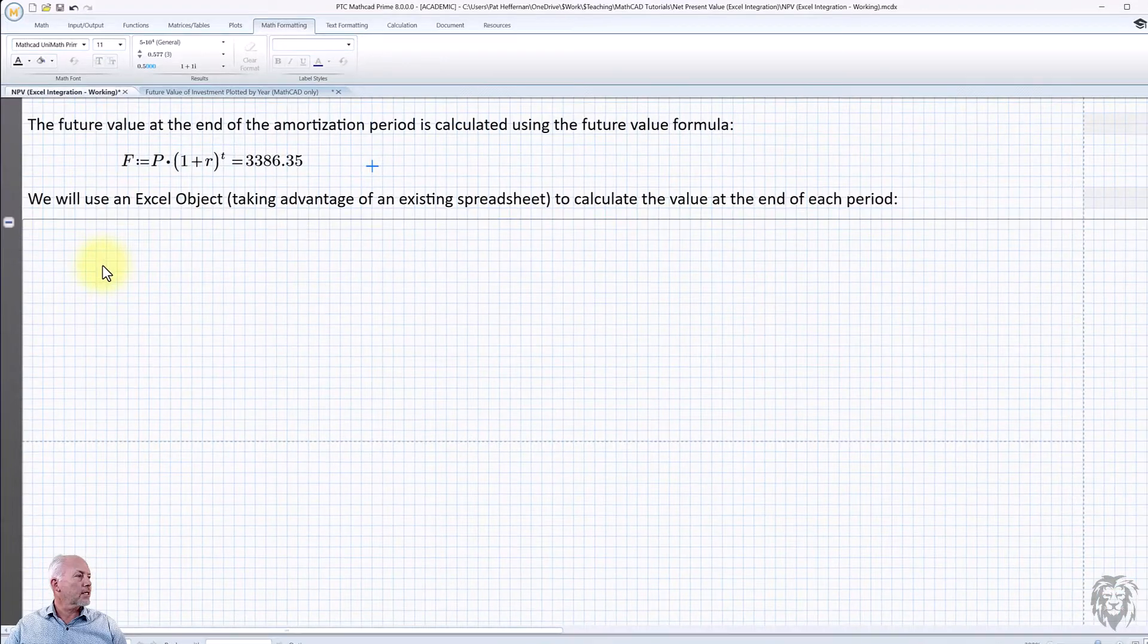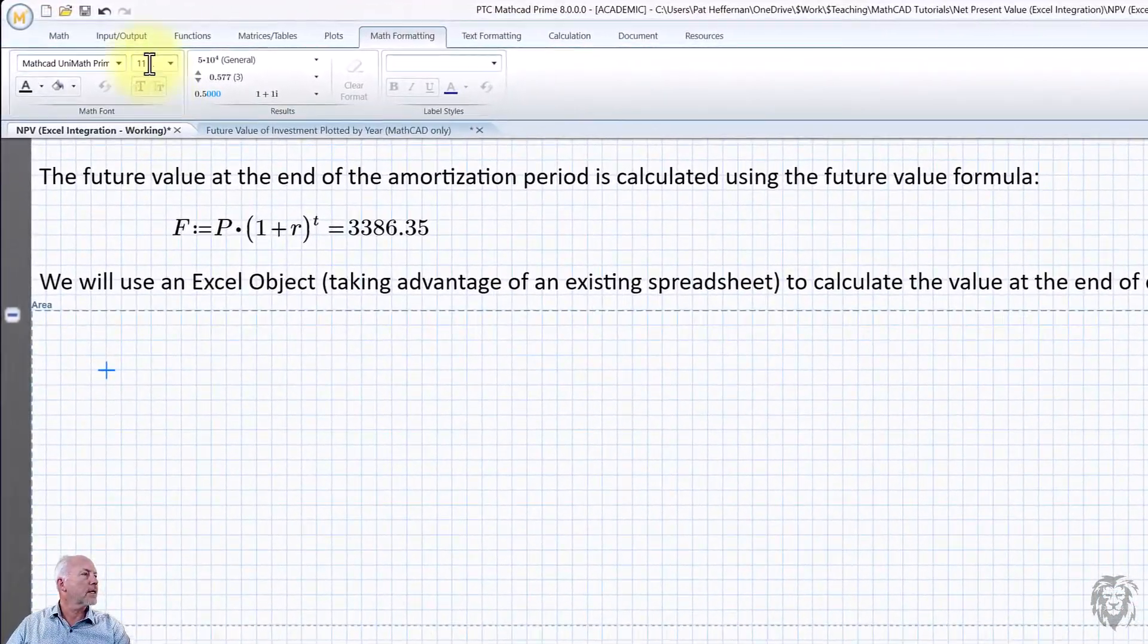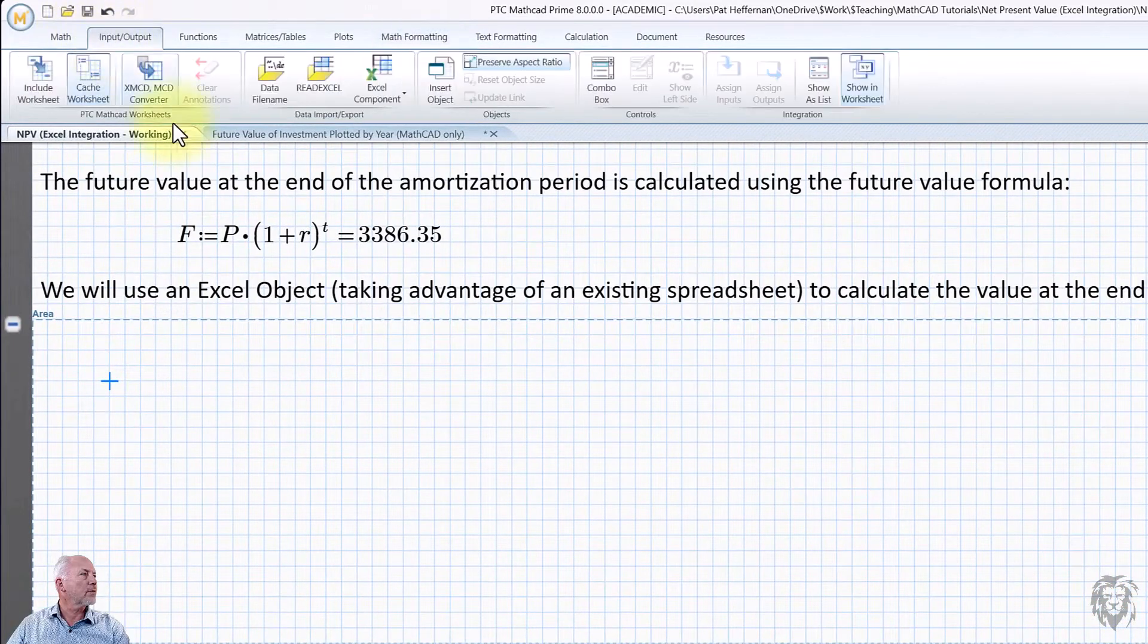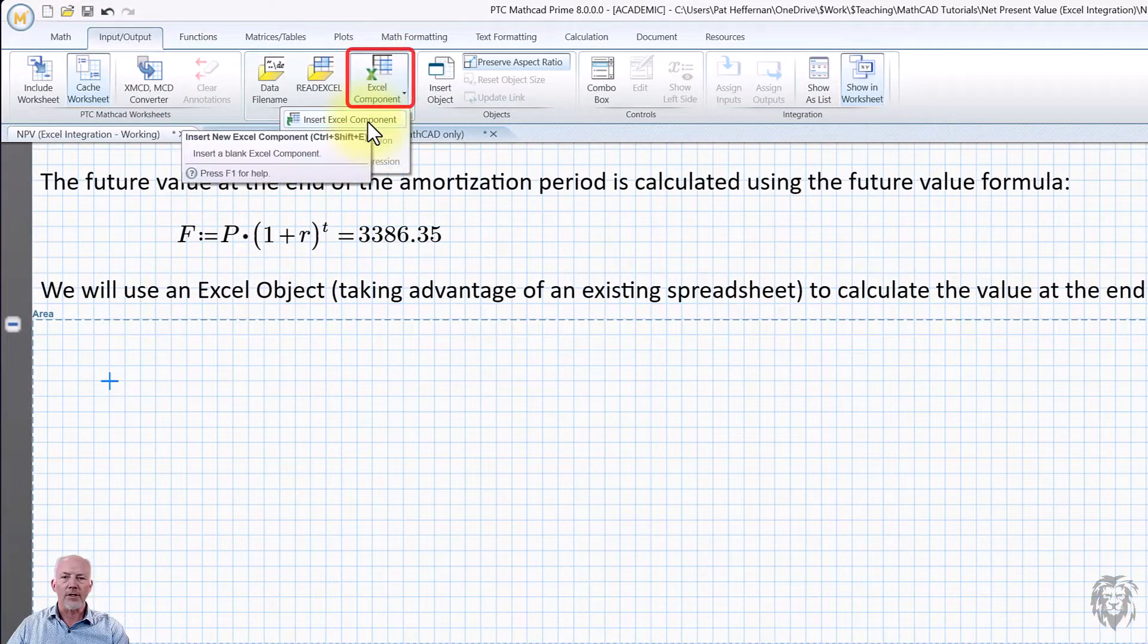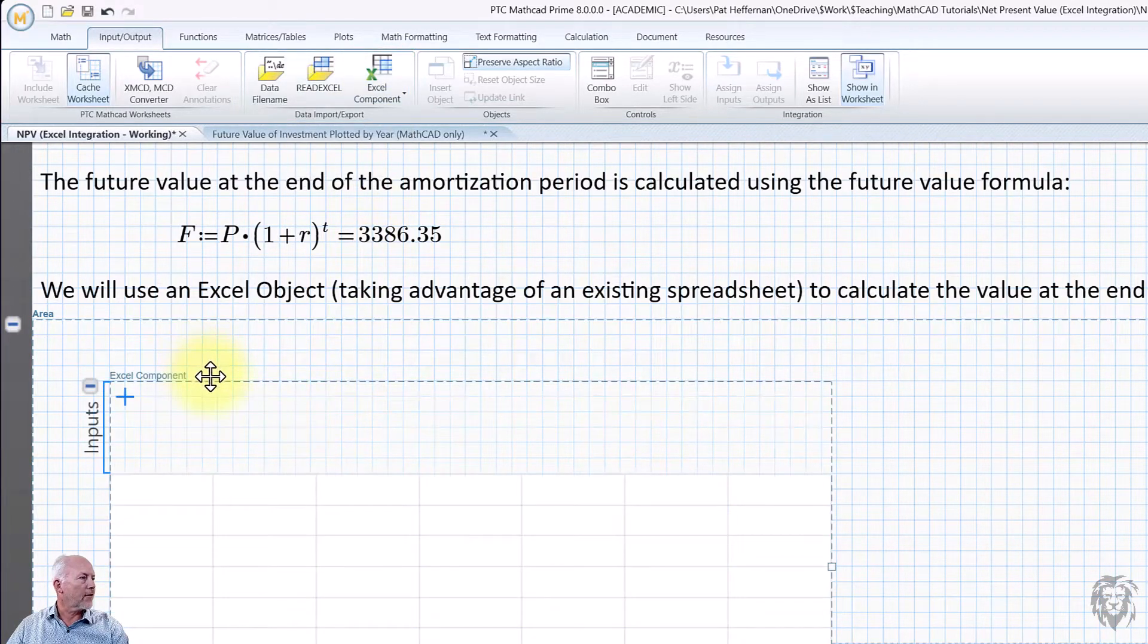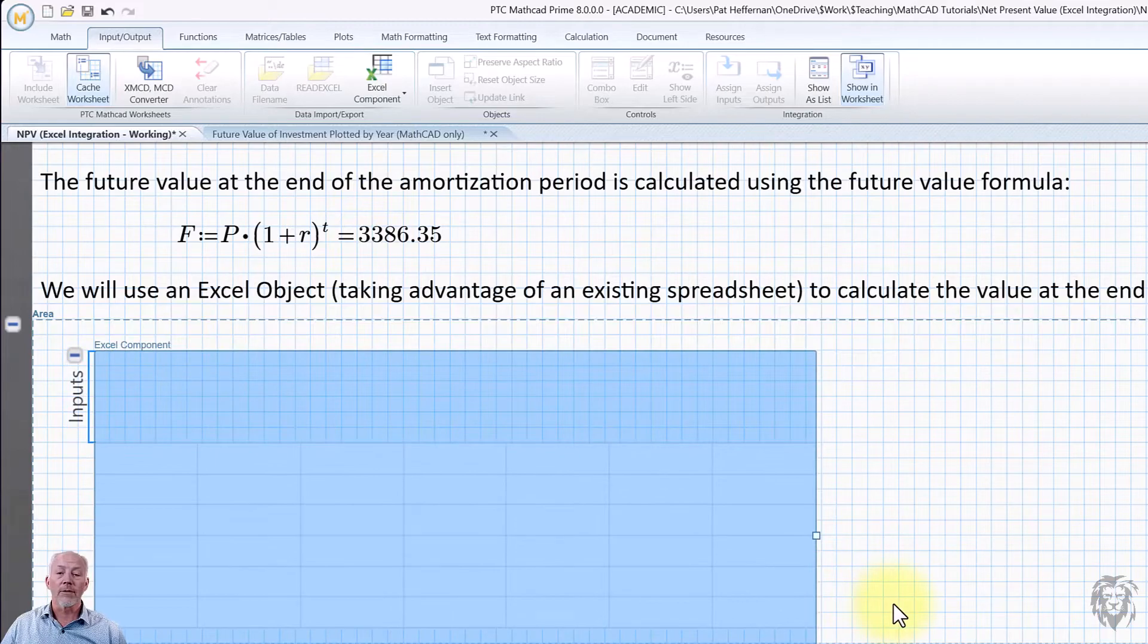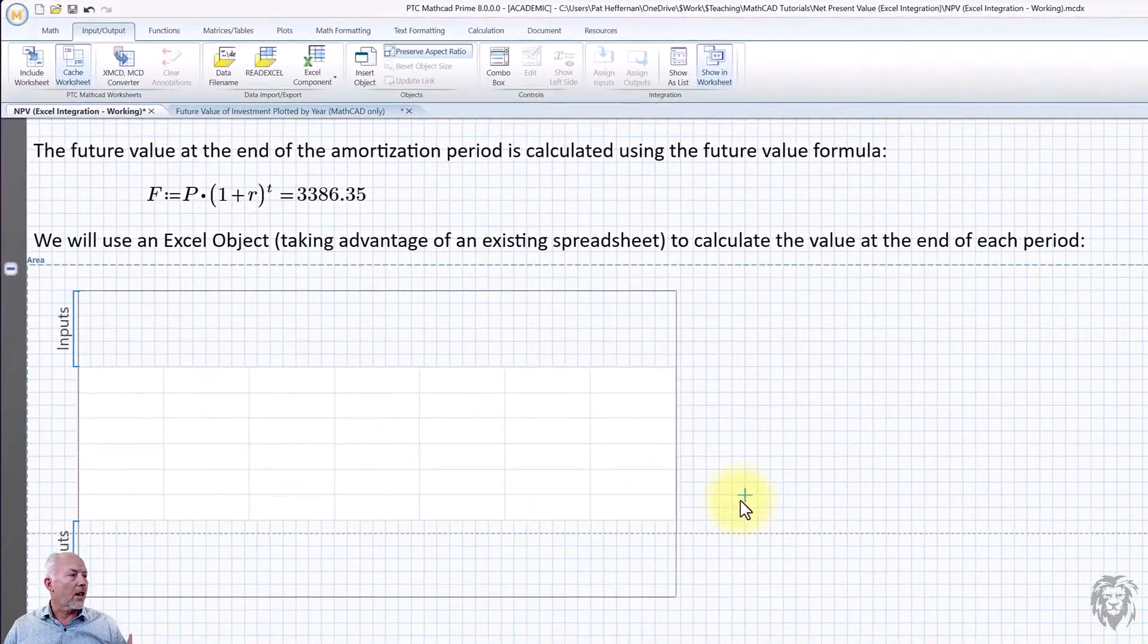Okay. So we're going to use the Excel object. I've got some space for it. I'm going to go to the input output tab and I'm going to choose the Excel component, insert Excel component. And so it does that right here. Now, remember the assumption was, is that the reason why I'm using my Excel component is because I already have the calculations in a spreadsheet.